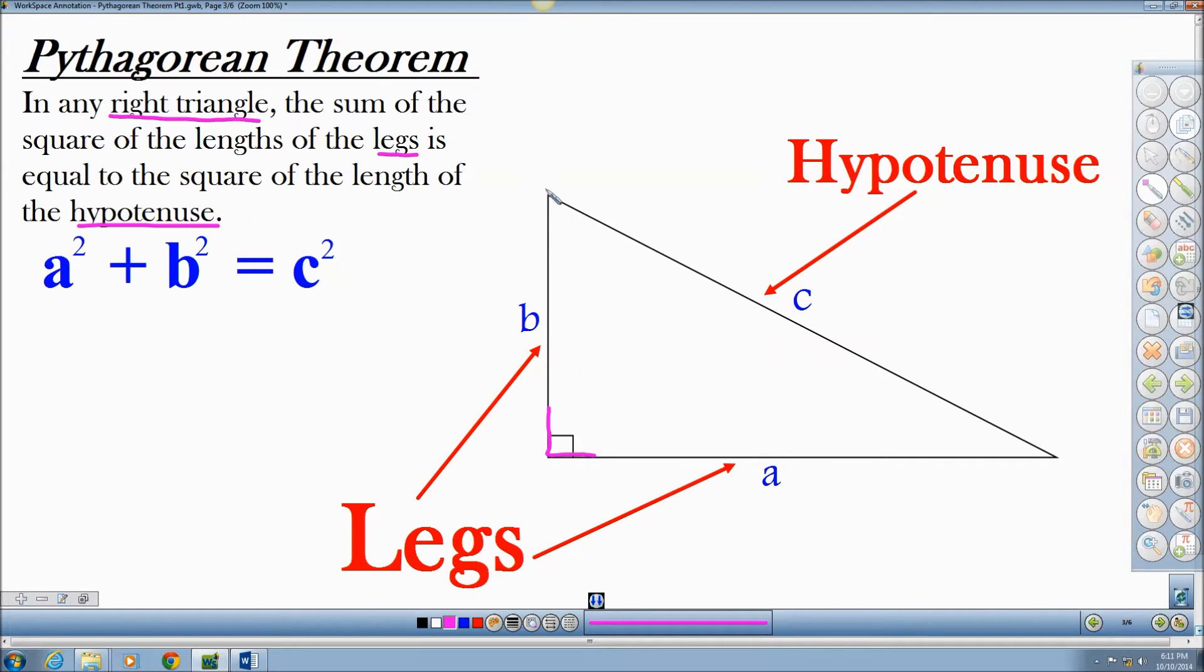And the hypotenuse is the longest side, which is across from the 90. So sitting right across from this 90 degree angle is the hypotenuse, side C.